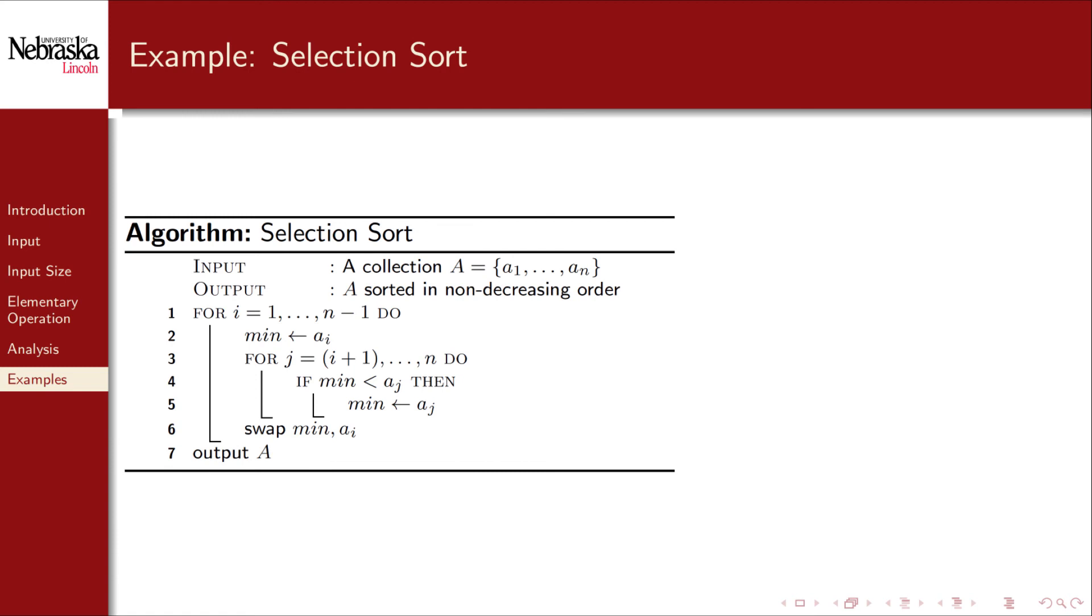Our final example is a familiar algorithm, selection sort. The first two steps are straightforward. The input is the collection, and its size is n. We could analyze this algorithm with respect to the number of swaps on line 6, and that would be a perfectly valid analysis. For this example, however, let's stick with the comparison on line 4. To reiterate a point from before, we observed that the algorithm is performing other operations as well. In the loops on lines 1 and 3, it's performing some additions as well as some comparisons to determine if the loop should continue execution. However, it would not be appropriate to analyze this algorithm with respect to either of those operations.